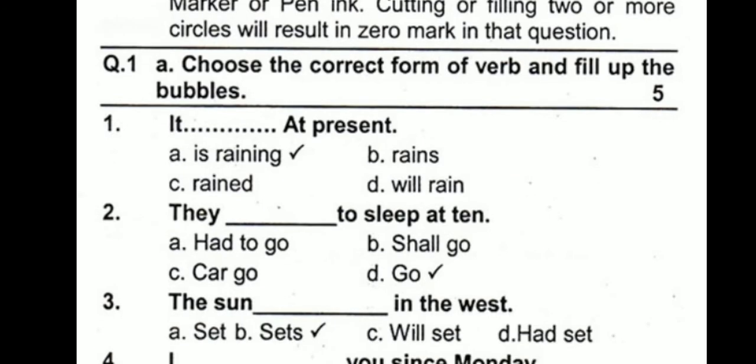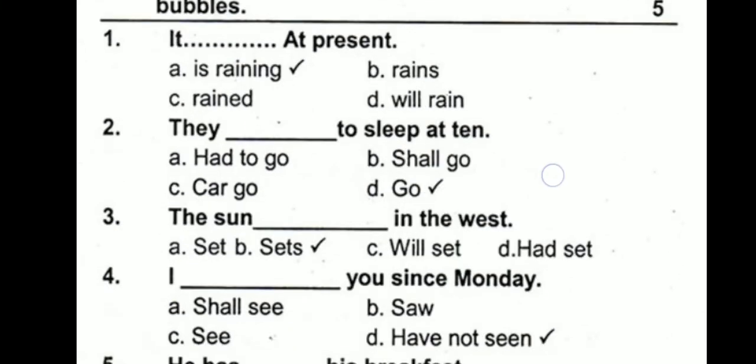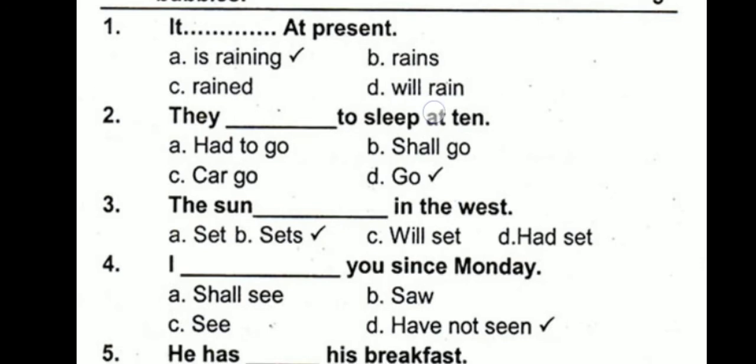Question number one: choose the correct form of verb. 'It dash at present.' The correct option is 'it is raining at present' because this is present continuous tense. 'It rains at present' doesn't make sense. 'It rained at present' — rained is the past form of the verb, and past forms are used in past tenses. The correct option is D: it is raining at present.